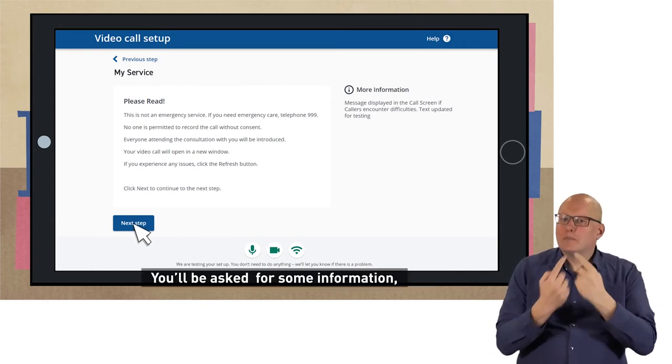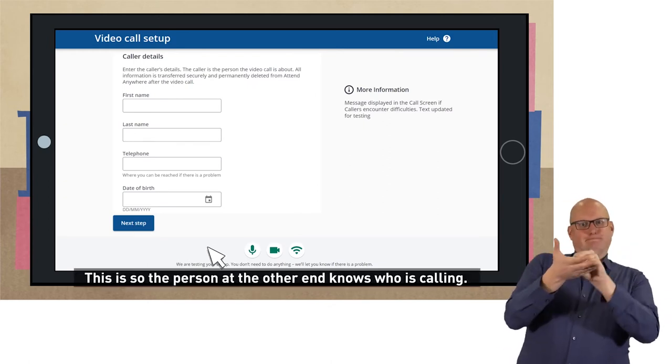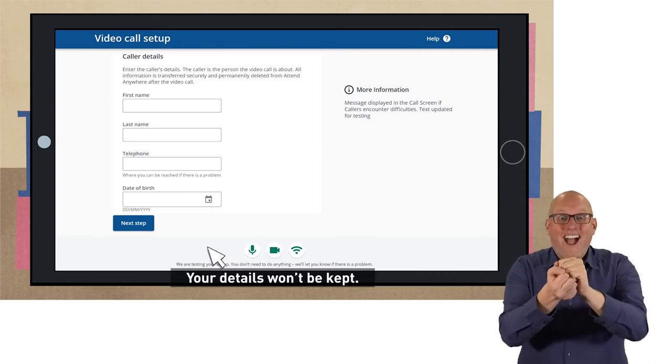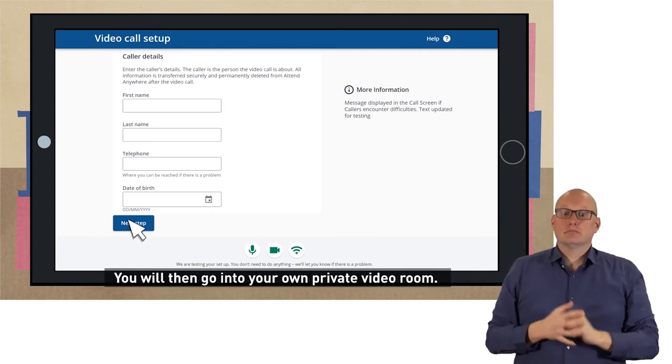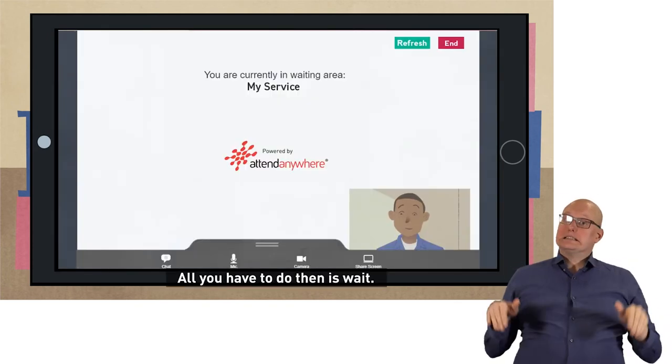You'll be asked for some information such as your name and phone number. This is so the person at the other end knows who is calling. Your details won't be kept. You will then go into your own private video room. All you have to do then is wait.